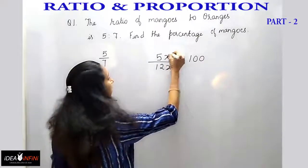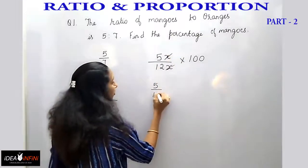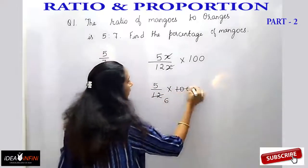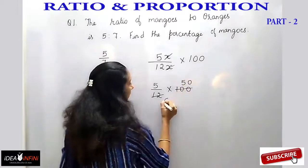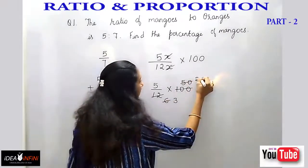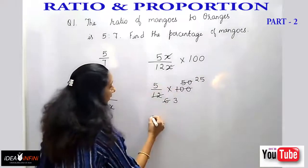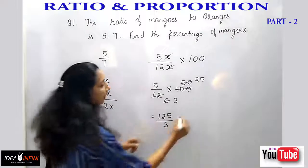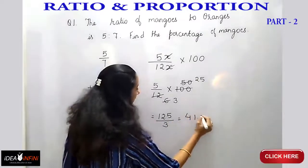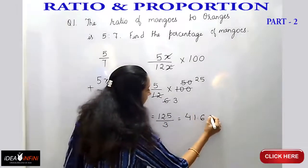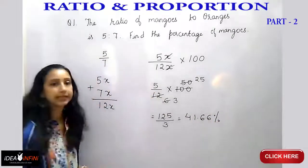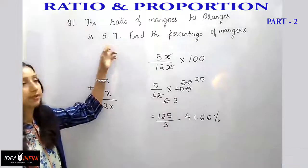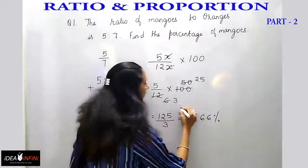Here x cancels out, giving 5 by 12 into 100. Simplifying: 100 divided by 2 is 50, divided by 2 again gives 25, then 25 into 5 is 125, divided by 3 gives 41.66. So the percentage of mangoes is 41.66% when the ratio is 5 is to 7.